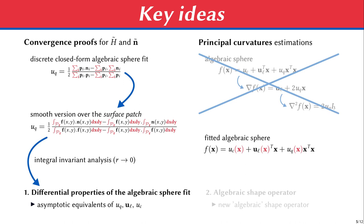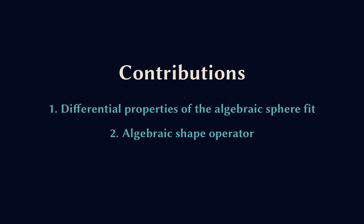Instead, we consider the fitted algebraic sphere, which is very different, because now uc, ul, and uq, the parameters of the sphere, actually depend on the point where we perform the fit. And since they have closed form expressions, we can compute the derivatives of this fitted sphere F to obtain a new shape operator that we call algebraic shape operator, and then we can have principal curvatures and their directions. These are the key ideas of our two contributions.